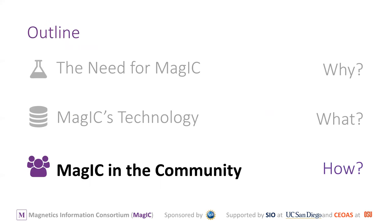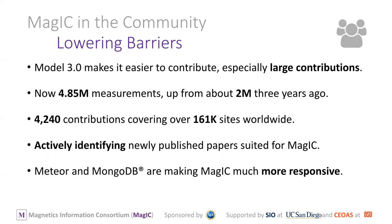In MAGIC in the community at large: there's a new data model with nine tables. Model 3.0 makes it a lot easier to contribute, especially with large contributions — it's faster and simpler. There are now close to 5 million measurements in the database, up from around 2 million three years ago, with over 4,000 papers and 161,000 paleomagnetic sites worldwide. There are surely mistakes — if you're using it, let us know so we can fix them, or you can fix them yourself.